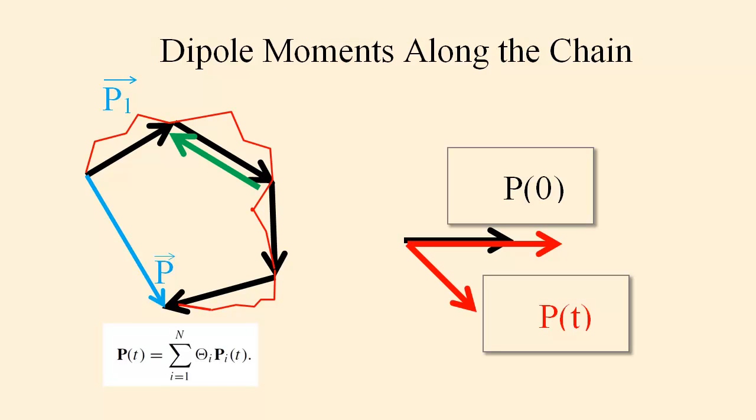Let us consider the part of the dipole moment that lies along the chain axis. On the left of the slide, the thin red line is a symbolic representation of a polymer chain as it winds through solution. The black arrows represent the dipole moments of pieces of the chain, the component that lies along the chain axis. P sub 1 is the dipole moment of the first piece of the chain. The total dipole moment is indicated by the blue arrow. It's P at time t, and as indicated by the equation, P is the sum of the P sub i multiplied by the thetas.